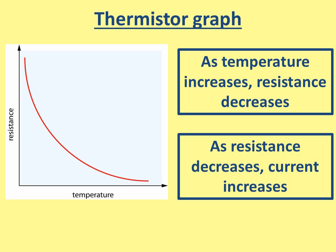This slide summarizes everything you need to know. As the temperature increases, resistance decreases — which you can see from the graph on the left. Then as the resistance decreases, current increases. If you're unsure about this, you can look at a different video on resistance, but these are the main facts you need to know for a thermistor.